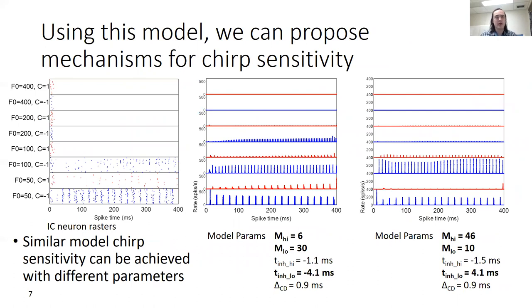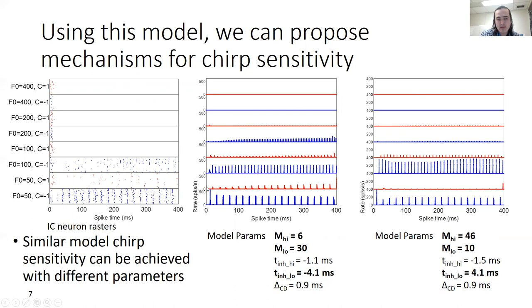Here are some preliminary results. Using this model, we can propose mechanisms for chirp sensitivity. On the left, you can see dot rasters for a neuron that is selective for negative Schroeder chirp but turns off at higher velocities. Using this neuron as example data, the model produces parameter estimates across different iterations that result in differing guesses. Some model parameters, bolded here, are very different between two final model responses, yet result in pretty similar sensitivities. Some iterations are better at certain aspects: one retains a ghost of a response at the 50 Hz positive Schroeder condition, whereas the other is better at turning off at higher velocities.